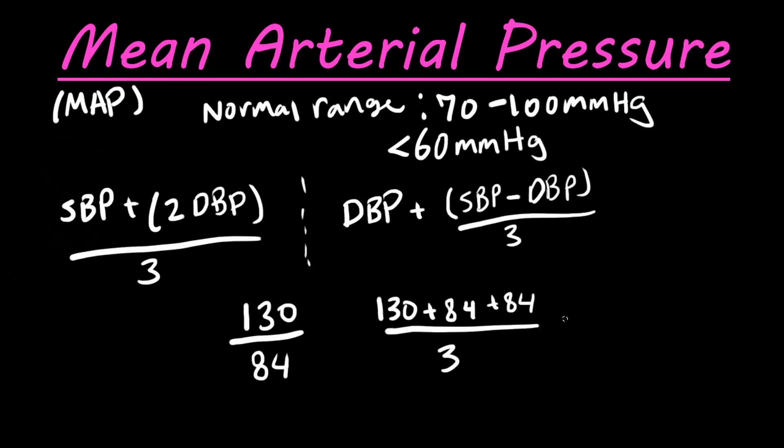This is going to give us a mean arterial pressure of 99.333 repeating, so I'll just go ahead and round that to 99, and then our units, millimeters of mercury, because we have pressure. So there is our mean arterial pressure, 99 millimeters of mercury for this blood pressure of 130 over 84, and that's how you get mean arterial pressure.